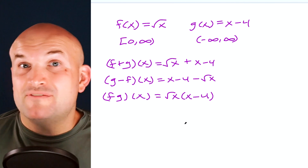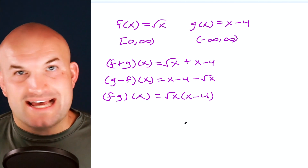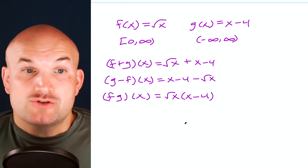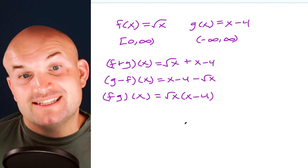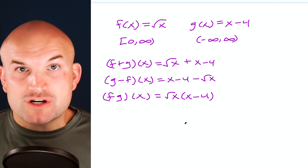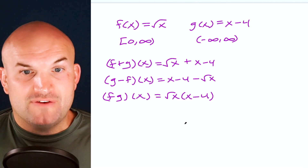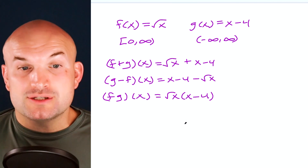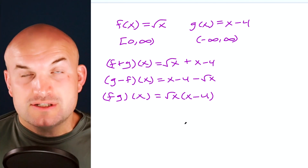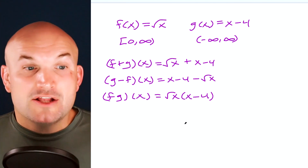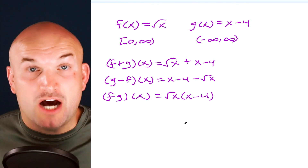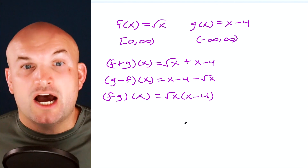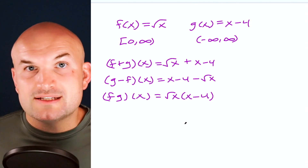For example, f(x) = √x has domain zero to infinity, and g(x) = x − 4 has domain all real numbers. When you add, subtract, or multiply two functions, you do not add or change any restrictions. So the domain for the sum, difference, or product of f and g is the intersection of their original domains, which is zero to infinity.